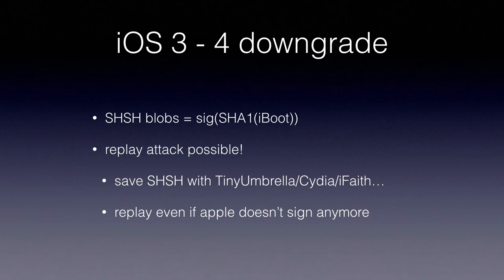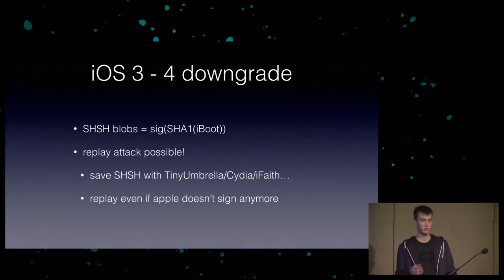How do we downgrade this? SHSH blobs are just a signed hash of the firmware, so there's nothing preventing a downgrade replay attack. What you do is save SHSH blobs while they're being signed — tools like TinyUmbrella, Cydia, and iFaith can do that. When Apple stops signing them, you replay them. You hook your device up to iTunes, man-in-the-middle the traffic to the Apple server, send the saved blobs, and iTunes gives them to the device — which accepts them and lets you downgrade.